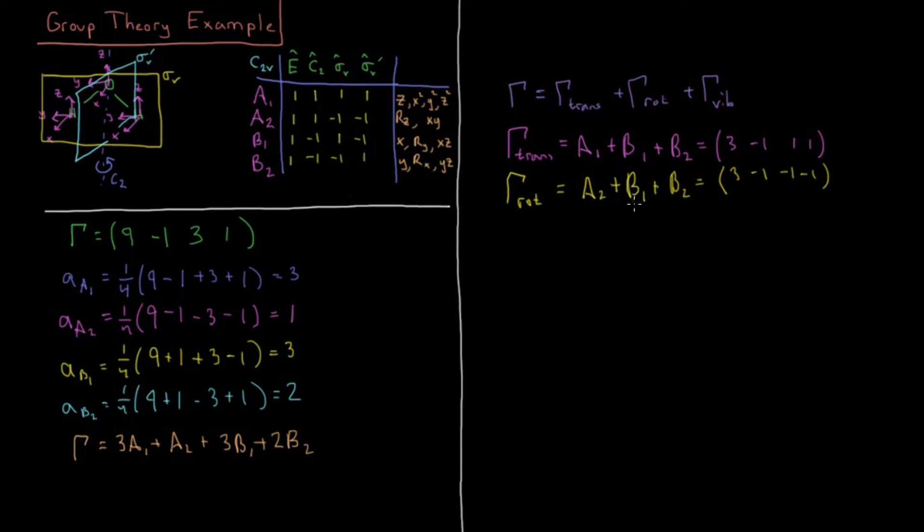Same thing, we can subtract out A2, B1, and B2 from our irreducible, or we can subtract out 3, minus 1, minus 1, minus 1 from our reducible. Either way gives the same answer.